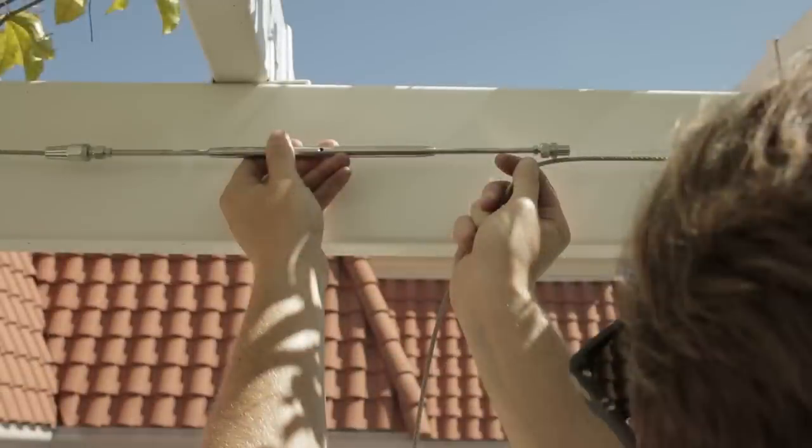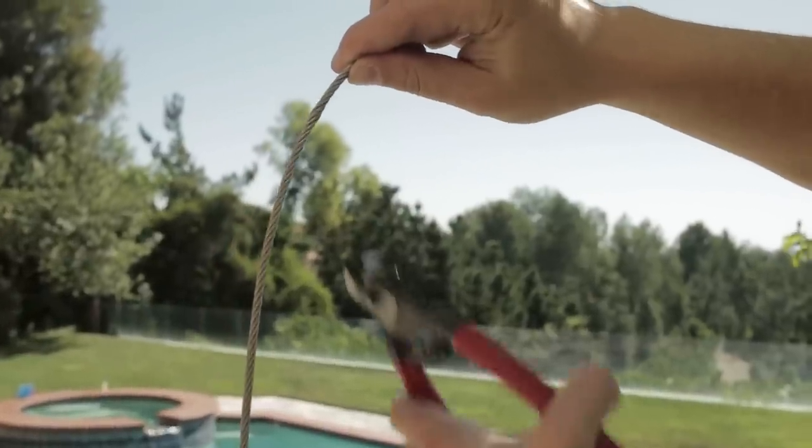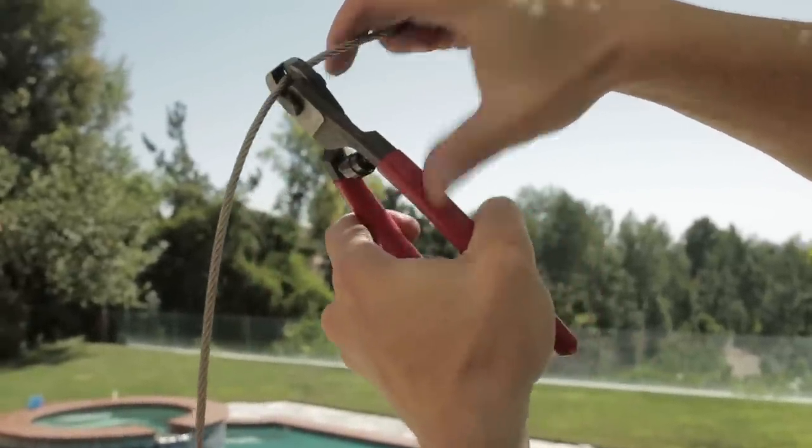Before connecting the other side of the cable to the turnbuckle, we need to cut off any extra cable. Hold the turnbuckle and bring the cable's free end and the turnbuckle together tightly. Then mark the desired cut location, plus 1 inch, and cut the excess cable.